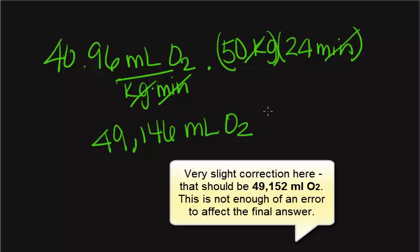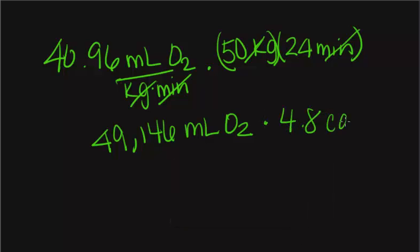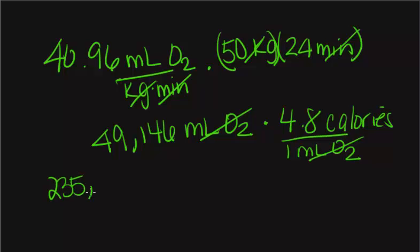We know that 1 milliliter of O2 is equal to 4.8 calories. If we multiply this by 4.8 and cancel out our units, this brings us to 235,900.8 calories.